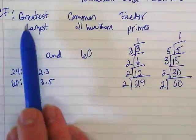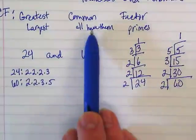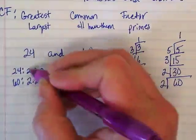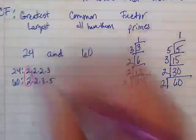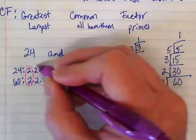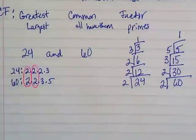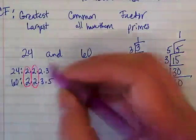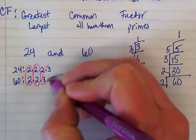We're trying to find the largest number that they have in common from their factors. I'm going to circle these two 2's because they both have them. I'm going to circle these two 2's as well. 24 has a third 2, but 60 does not. So that last 2 does not get circled in our commons. But these 3's do.